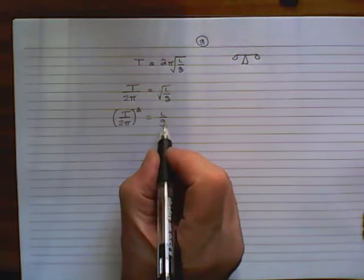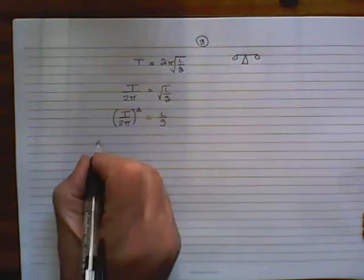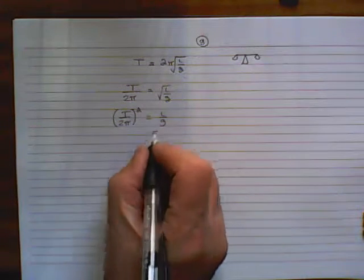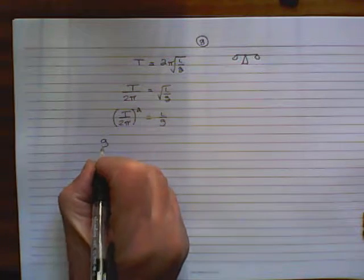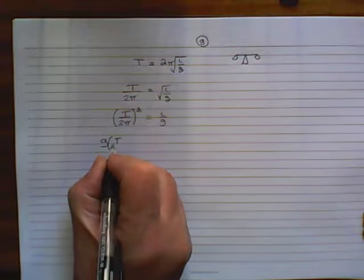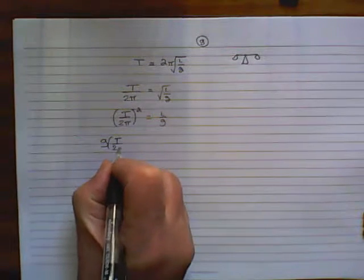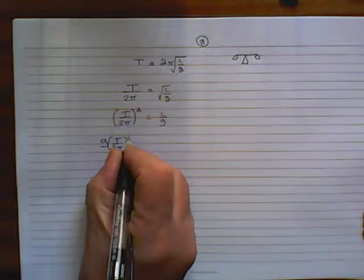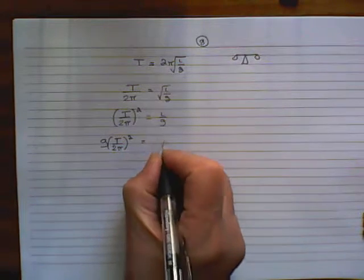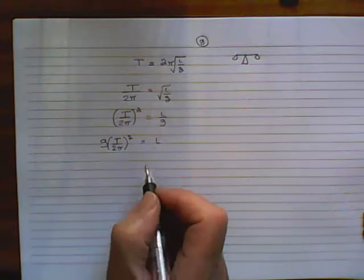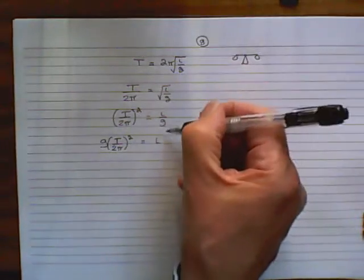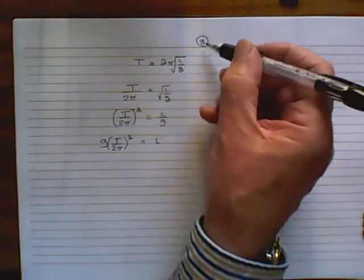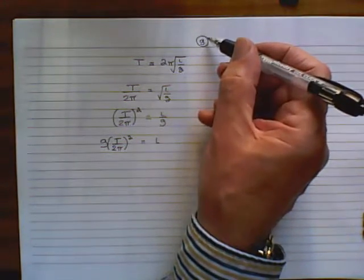So I think what we need to do is to multiply both sides by G. So we've got G times T over 2π, squared, equals L. Well, that's fine, but we've now found out for L. What we want to find out was for G.